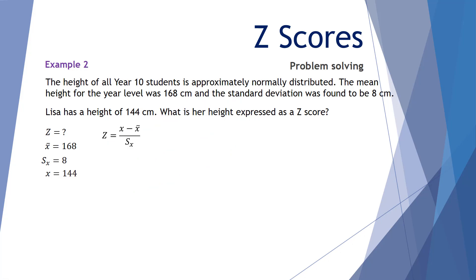Using the equation: the z-score equals the individual height take away the mean height of the sample, divided by the standard deviation. So we have Lisa's height of 144, take away the mean of 168, divided by 8. The numerator states that Lisa's height is 24 centimetres below the mean. Dividing by the standard deviation of 8 gives a z-score of negative 3.